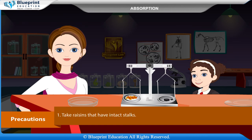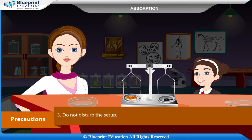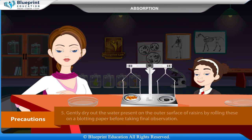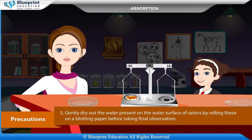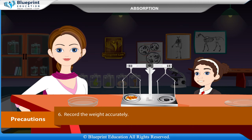Precautions: Take raisins that have intact stalks. Do not add excessive water, but raisins should be completely immersed. Do not disturb the setup. Do not tightly pack the raisins. Gently dry out the water on the outer surface of raisins by rolling them on blotting paper before taking the final observation. Record the weight accurately. This experiment has made the concept very easy to understand.